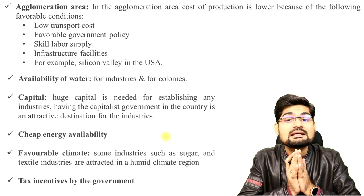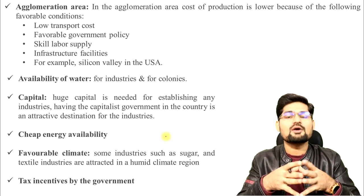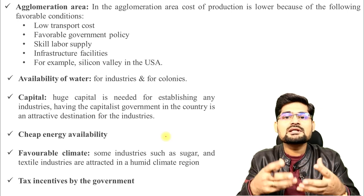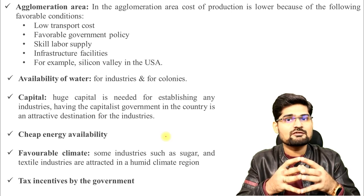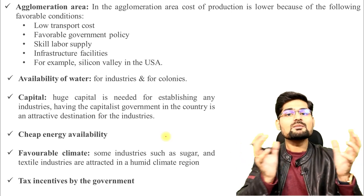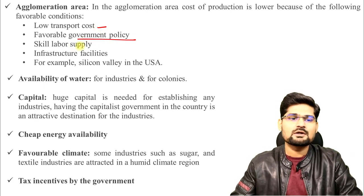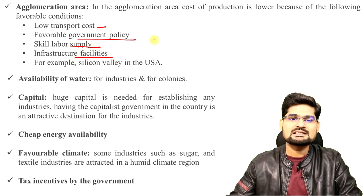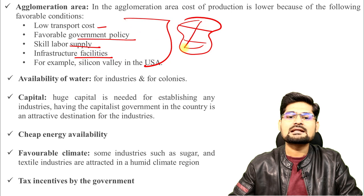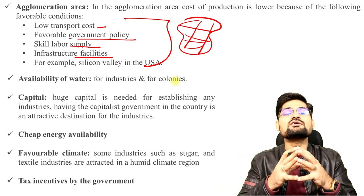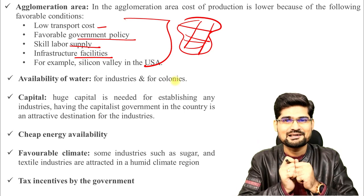Agglomeration areas play a pivotal role in modern economies, especially post-World War II economies. No single area in isolation can develop as an industrial hub. The agglomeration of factors — low transportation costs, favorable government policies, skilled labor, and infrastructure facilities — in a particular region makes it an industrial hub. It is the combination or agglomeration of factors in one particular area that is important.